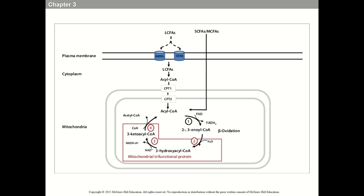The length of a particular fat dictates how it gets into the cell and then how it goes through beta-oxidation. Medium and short-chain fats diffuse right into a muscle cell. Longer-chain fatty acids — 14 carbons and up — must go through fatty acid translocase or CD36. Both terms mean the same thing, often written FAT/CD36 in textbooks.